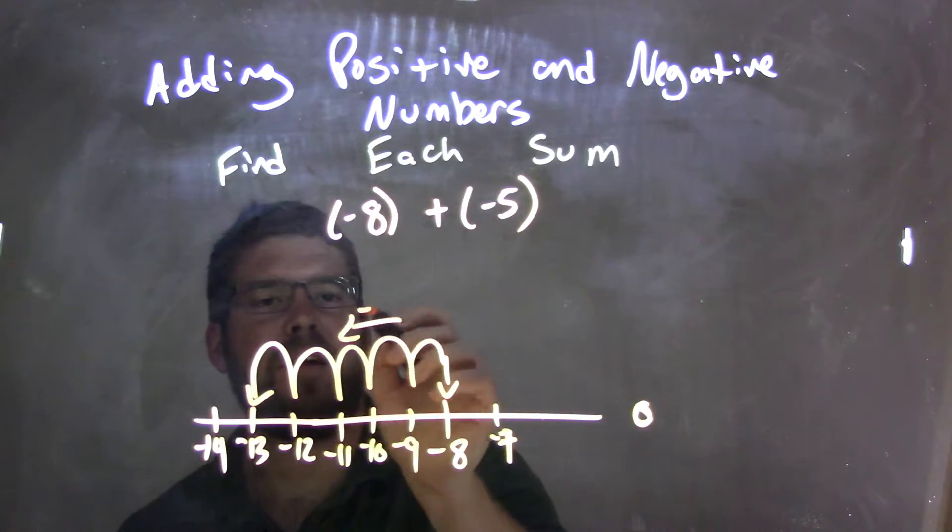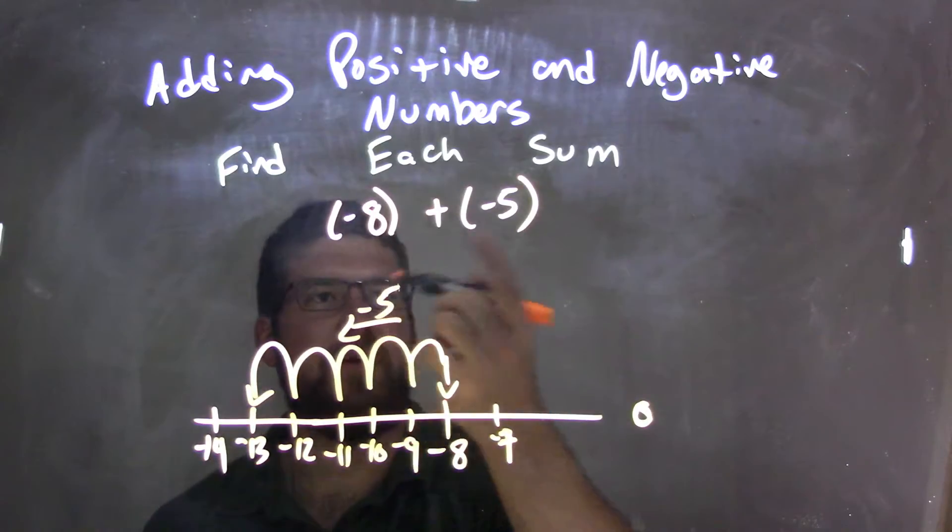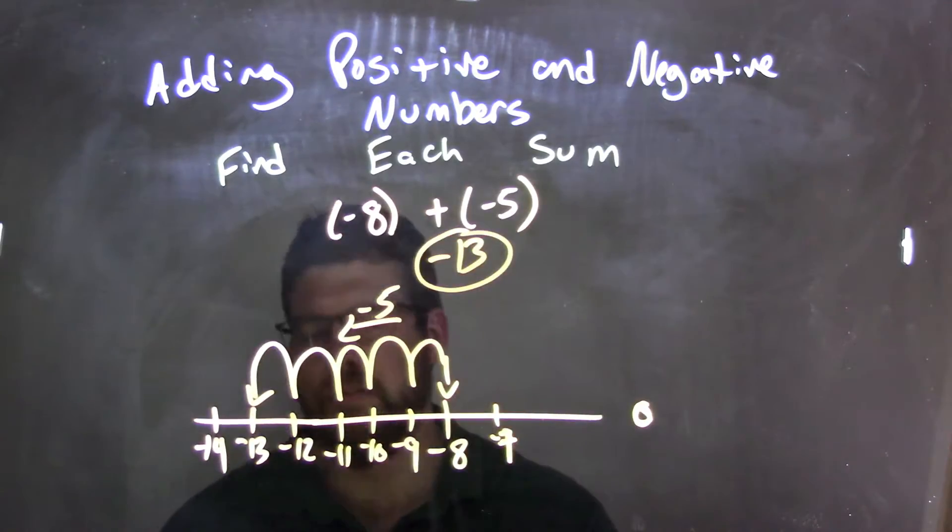So we move to the left negative 5 units from negative 8. Negative 8 plus negative 5 is negative 13, and there's my final answer.